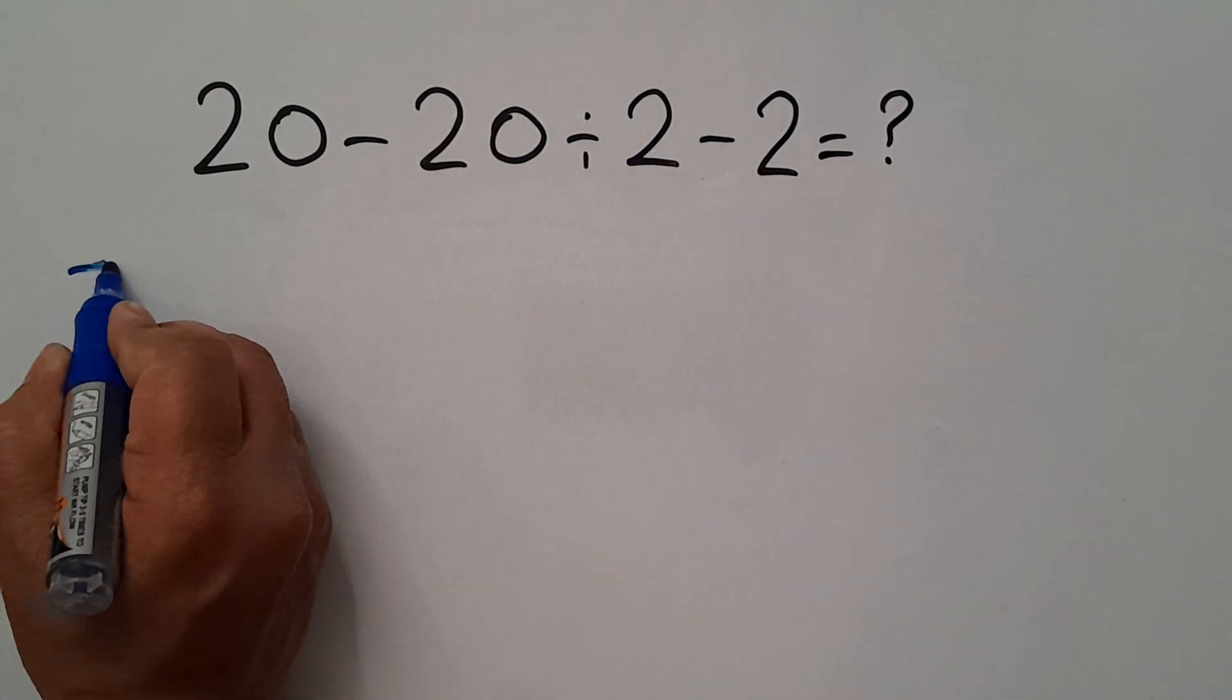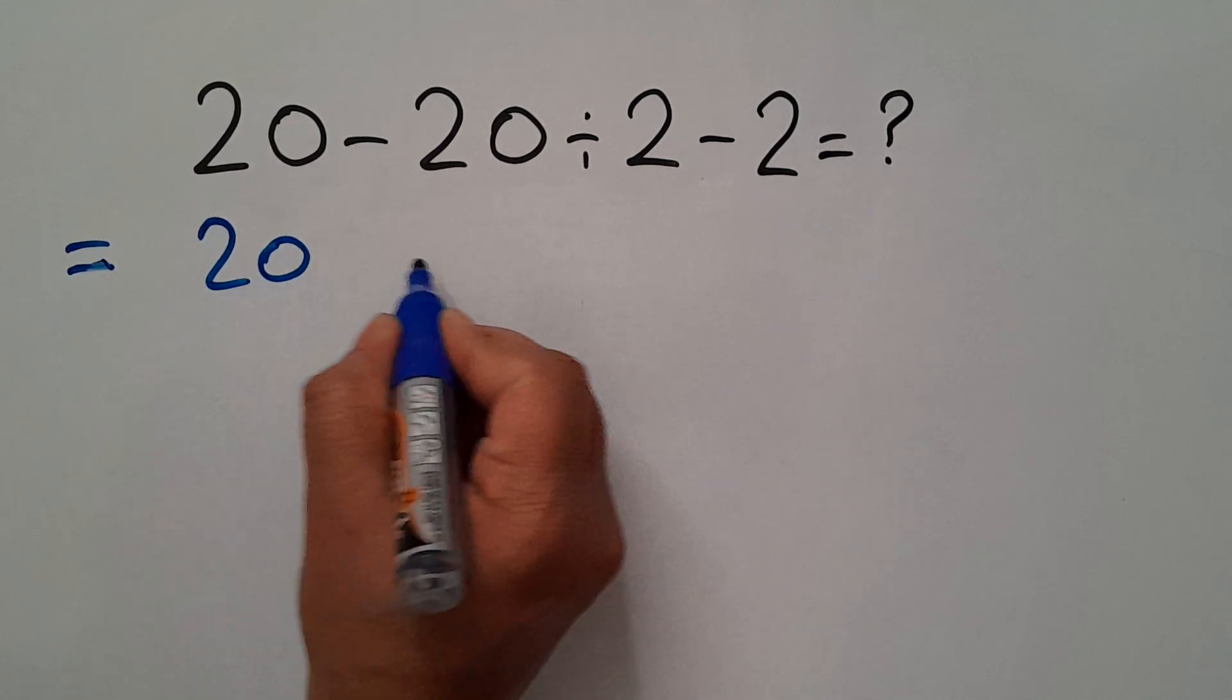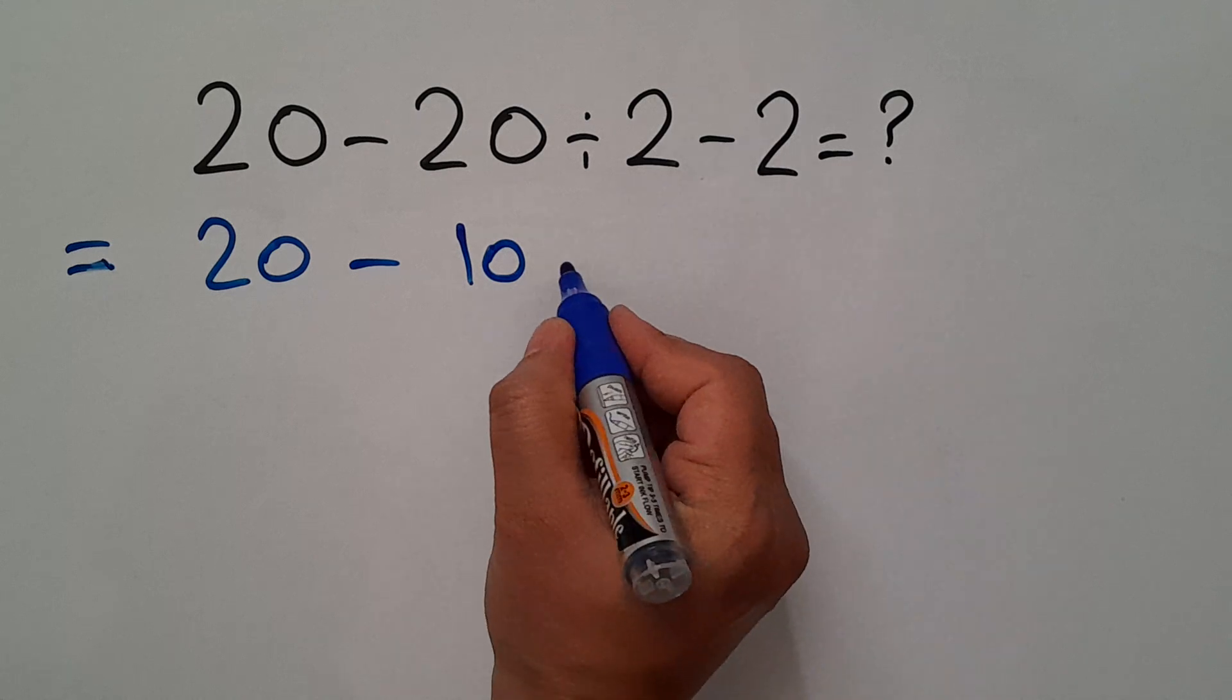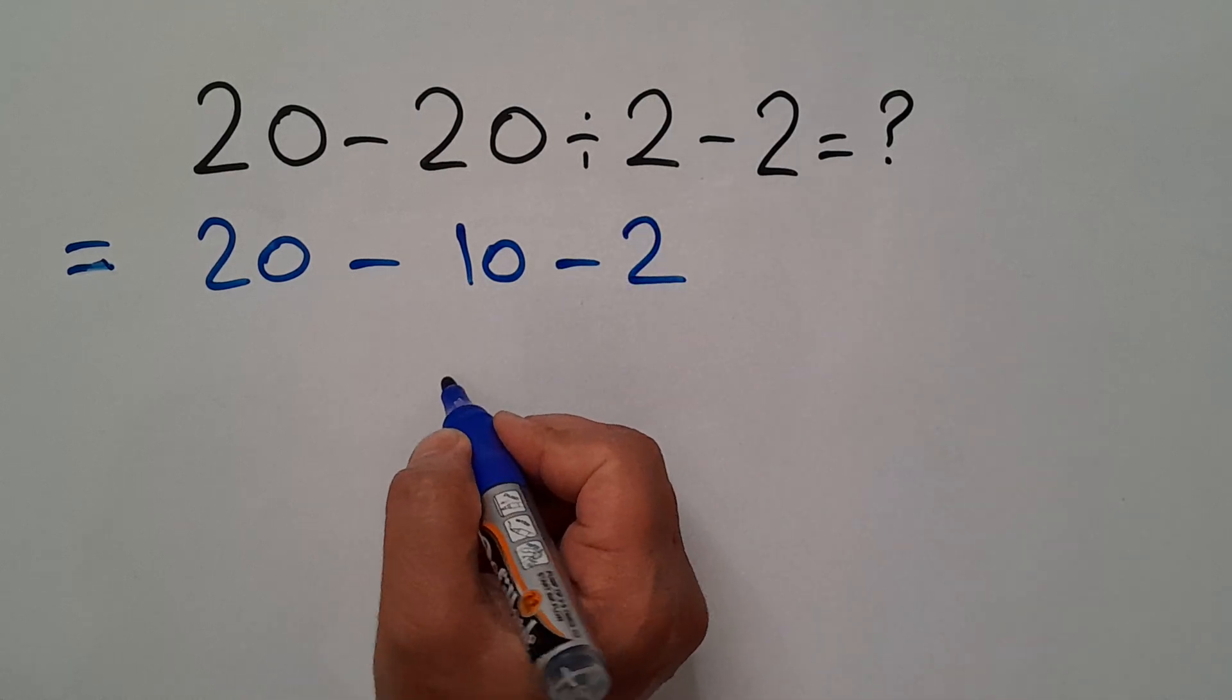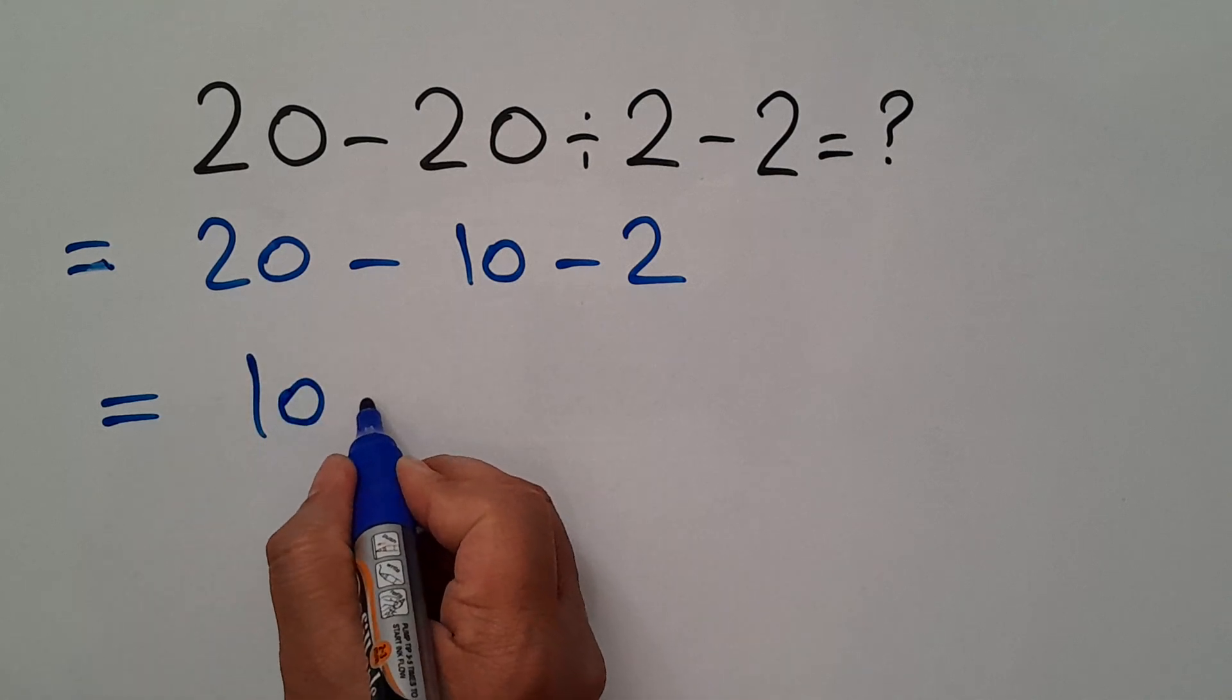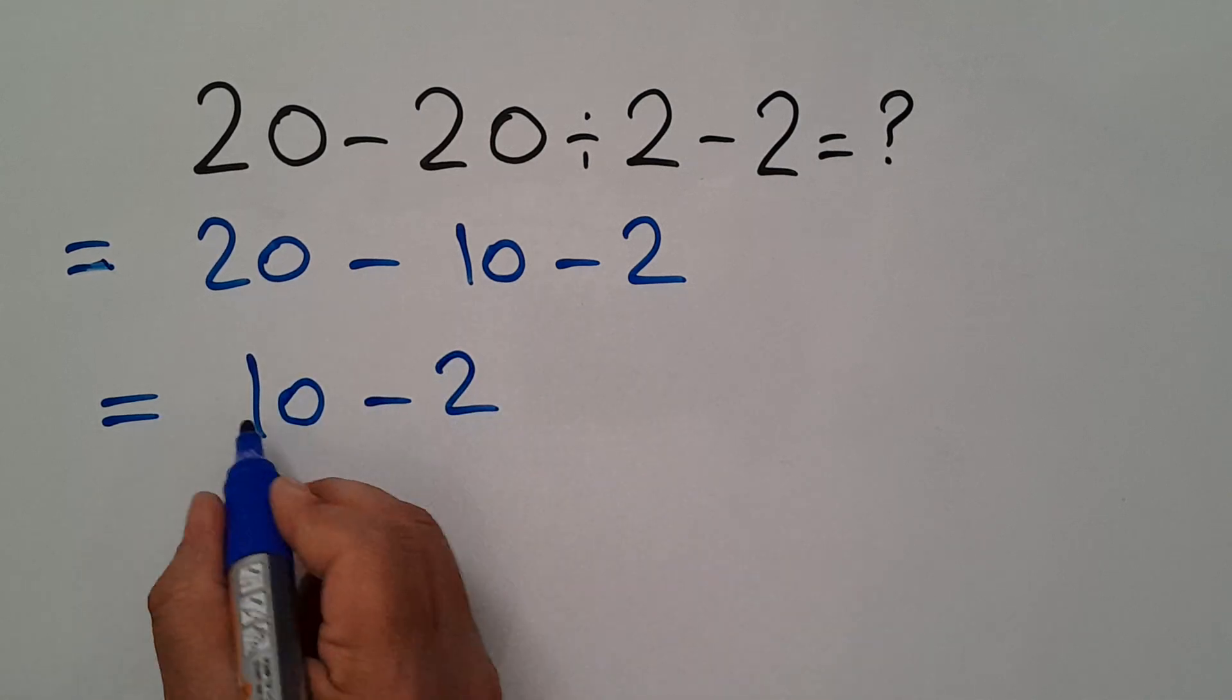So our expression equals 20 minus 10 minus 2. 20 minus 10 equals 10. 10 minus 2, and 10 minus 2 gives us 8.